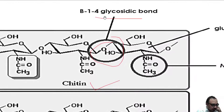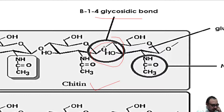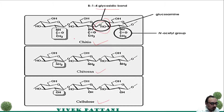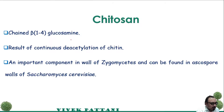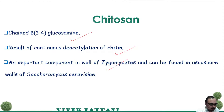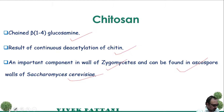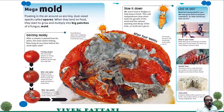This is just for your information. Chitosan is again beta-1,4 glucosamine, and is the result of continuous deacetylation of chitin. It is an important component in the cell wall of the Zygomycetes group of fungi and can be found in the ascospore walls of Saccharomyces cerevisiae.